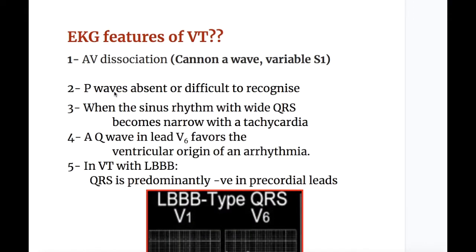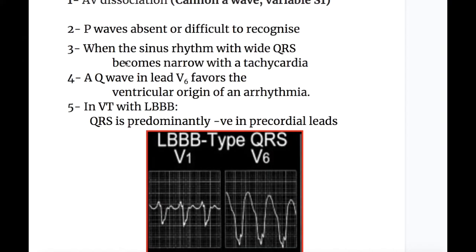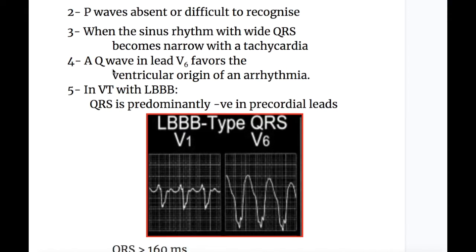EKG features of ventricular tachycardia: Number one — AV dissociation. Clinical features of AV dissociation include cannon A waves in the neck and a variable or split first heart sound. Number two — P wave is absent or difficult to recognize. Number three — when sinus rhythm with wide QRS becomes narrow with tachycardia.